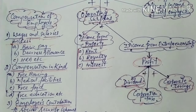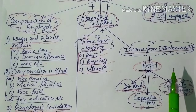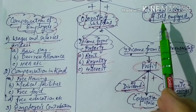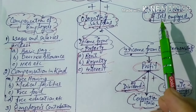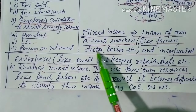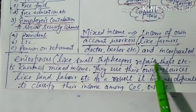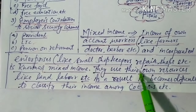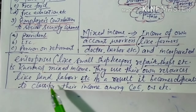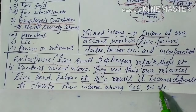The third component is mixed income of self-employed. This is where it is difficult to classify whether the income is from labor, capital, or land. Income of self-employed persons like farmers, doctors, and barbers, and of unincorporated enterprises like small shopkeepers and repair shops, is known as mixed income. They use their own resources — land, labor, capital — making it difficult to classify their income under compensation of employees or operating surplus.